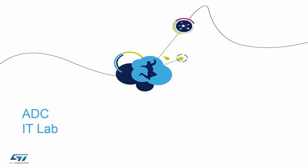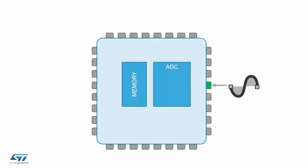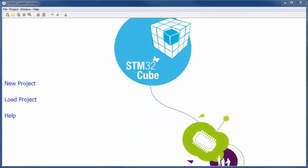In this lab we will do a simple hands-on using the ADC together with the interrupt. The principle will be very simple: we will configure the ADC which will read the value, store it into the data register, and then notify the microcontroller with an interrupt that we have received new data.